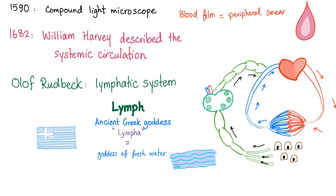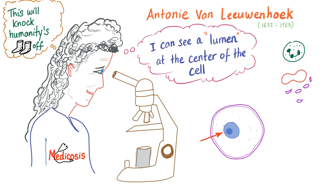In 1682, William Harvey described the systemic circulation. After that, Olof Rudbeck discovered the lymphatic system. Lymph comes from the Greek word lympha, an ancient goddess of fresh water, because lymph appears clearer than blood. Anthony van Leeuwenhoek — the same guy who discovered the nucleus — also discovered blood cells. He didn't have a Facebook account, which allowed for a lot of free time.